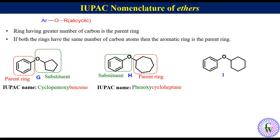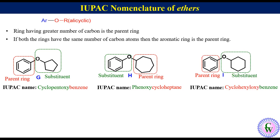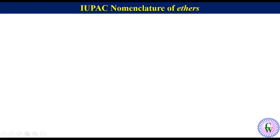In compound I, both rings have the same number of carbons. So in this case the aromatic ring acts as the parent ring and the cyclohexyloxy group acts as a substituent. Thus the IUPAC name of this molecule will be cyclohexyloxybenzene.